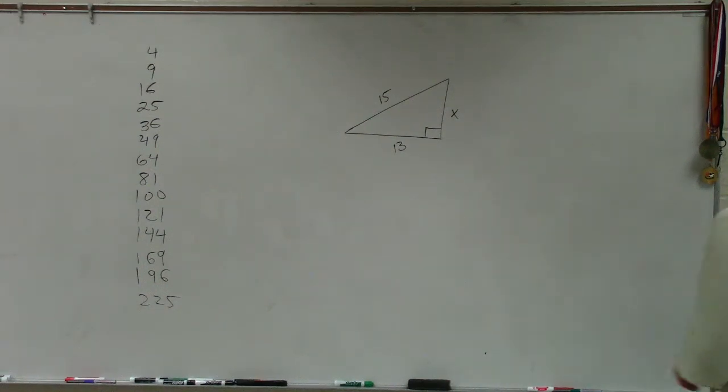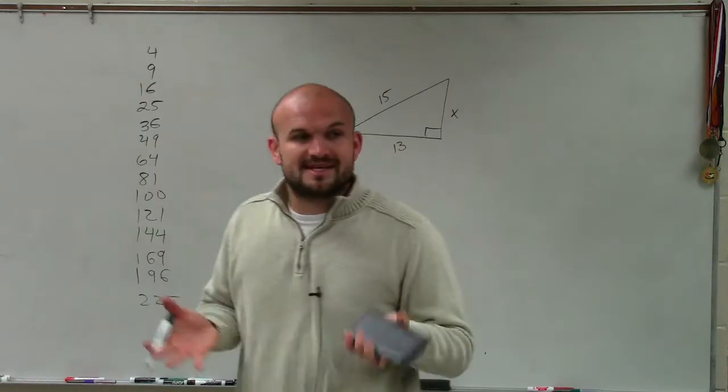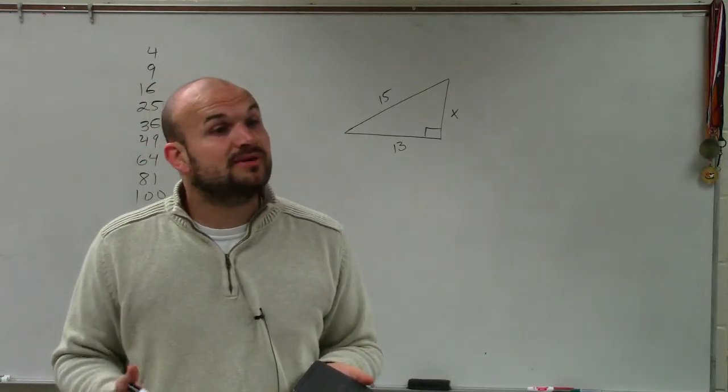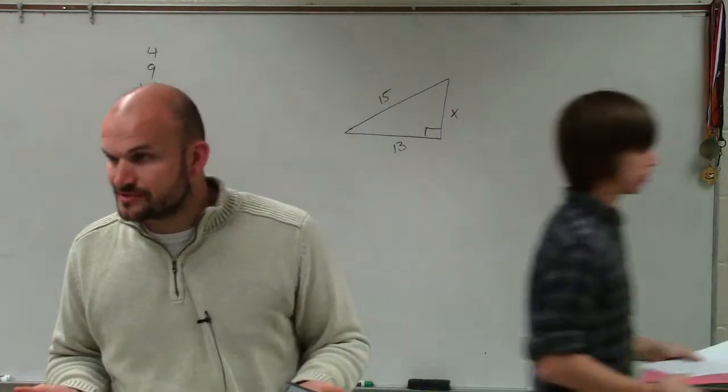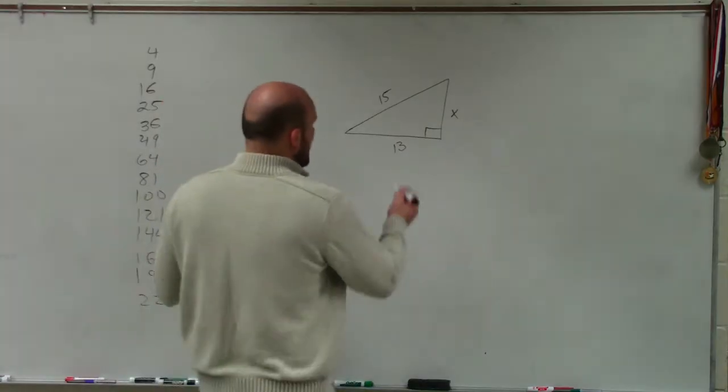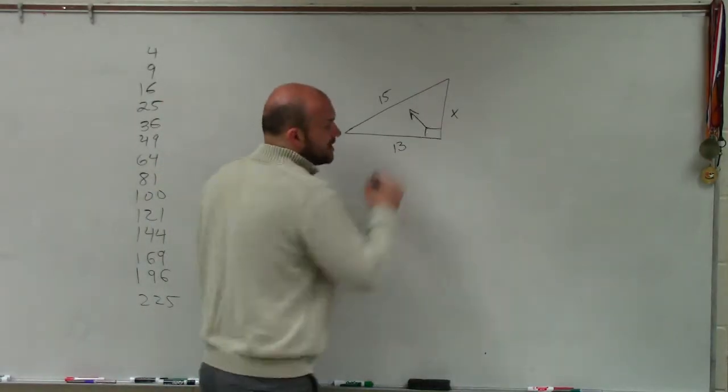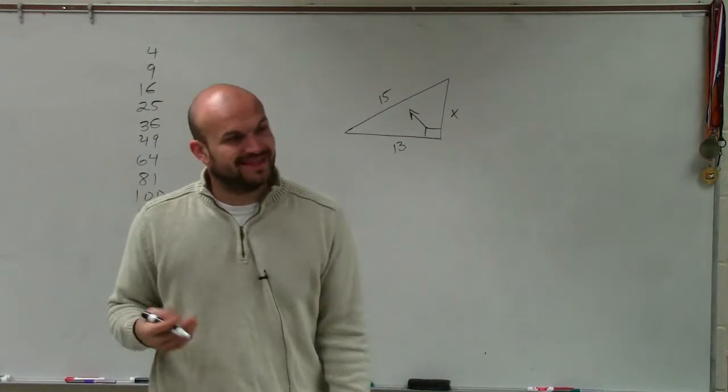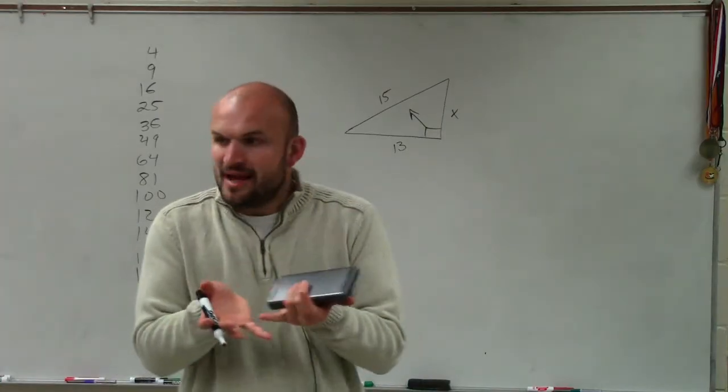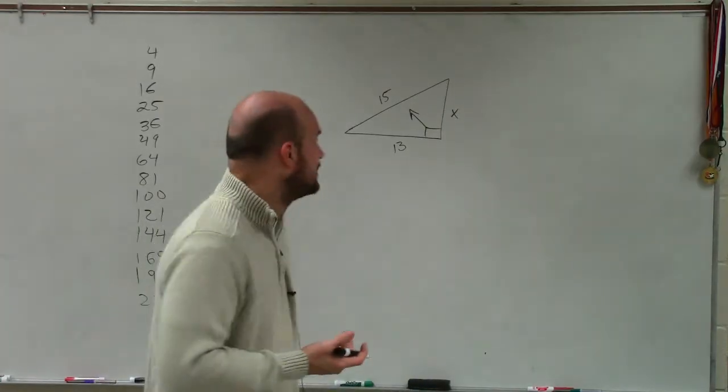So when looking at a problem like this, the main important thing that we want to do is identify what is going to be our legs and our hypotenuse. And remember, the hypotenuse is always directly across from your 90-degree angle, and the legs are the two sides that create your 90-degree angle.